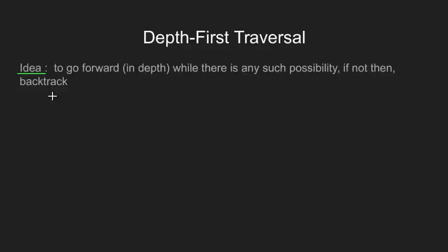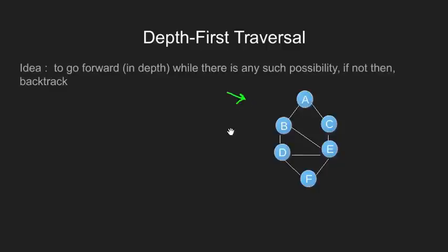Let's learn depth first search with the help of an example. Consider the graph as shown. We have 6 nodes labeled A to F.